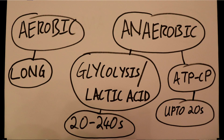The anaerobic system is broken into two parts: we've got the glycolysis or lactic acid system, and we've got the ATP-CP system.